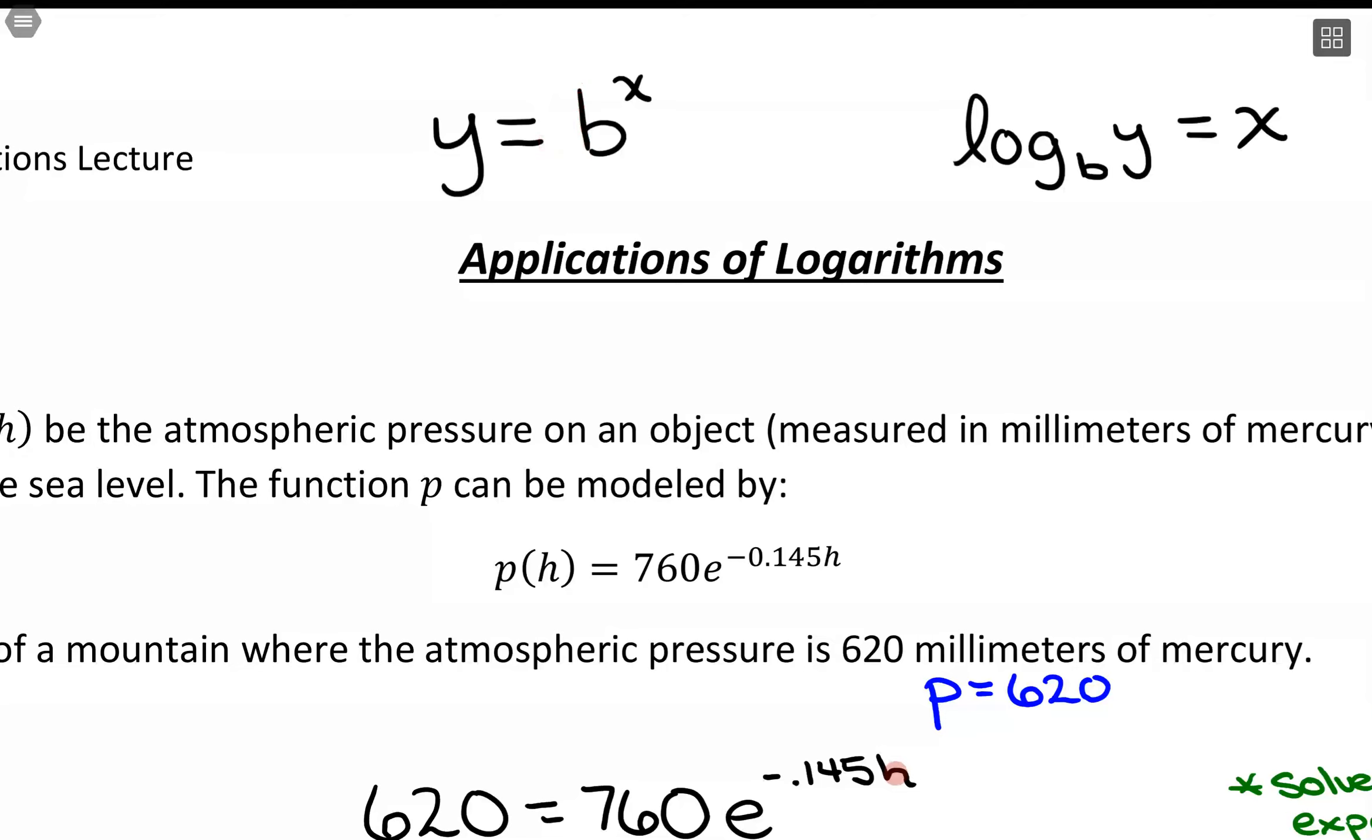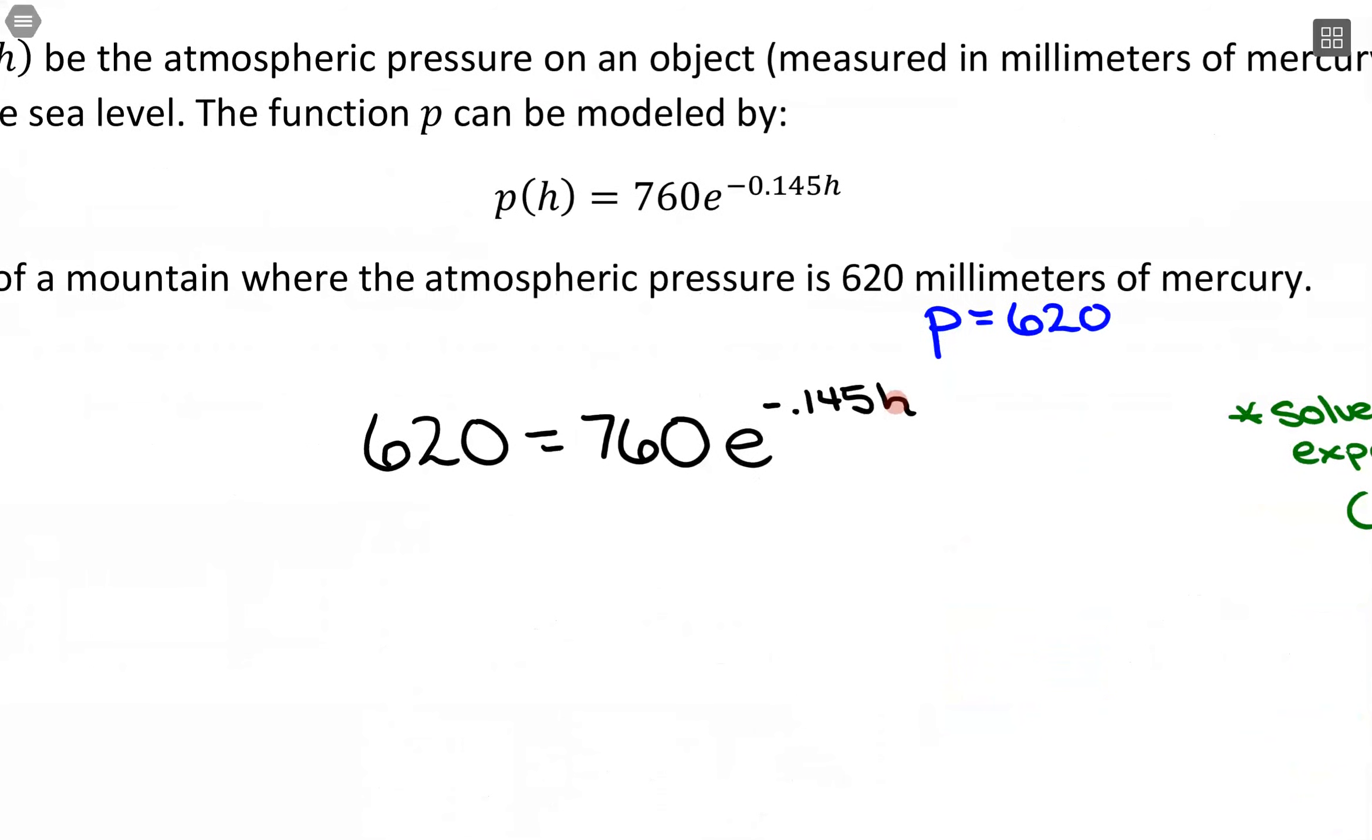So with that we need to move things around first. Basically what we want to do is isolate this base and exponent before we change to logarithmic form. So to do that I'm going to divide both sides by 760.